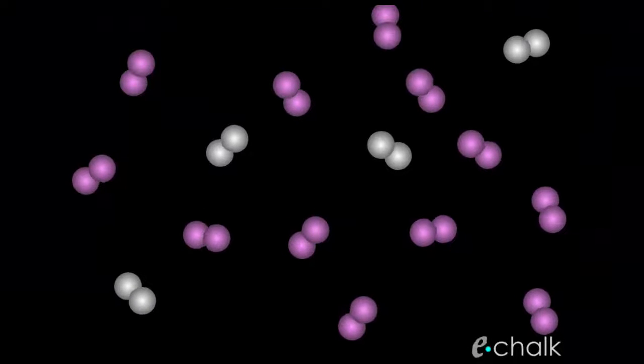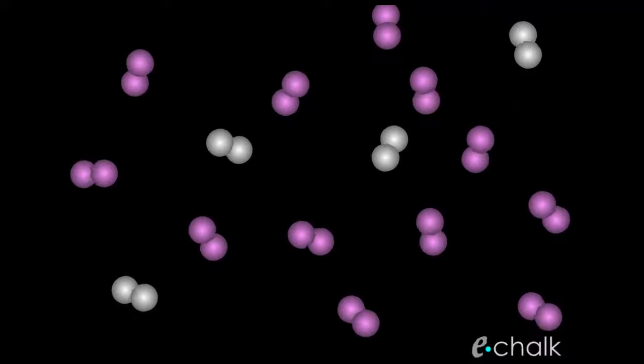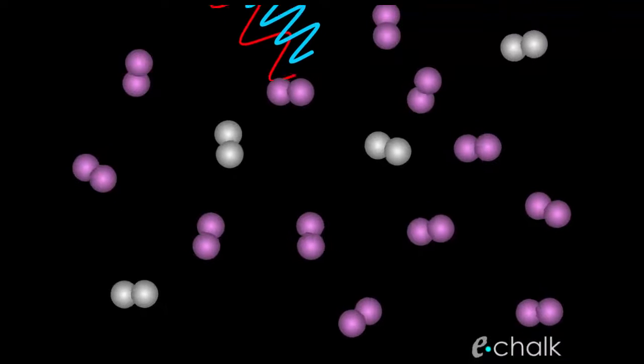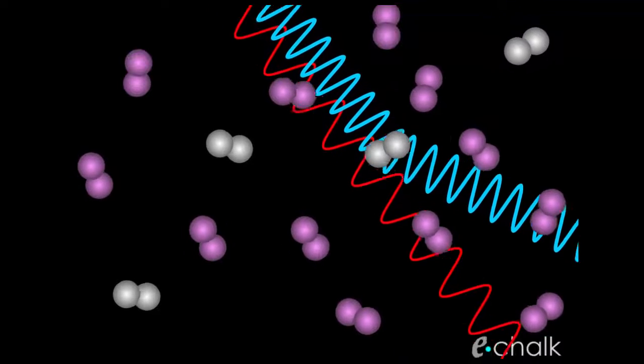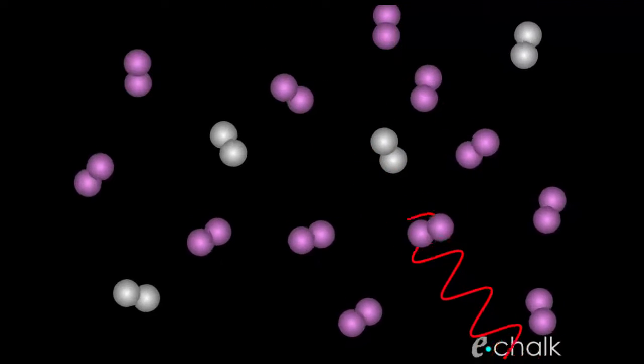Earth's atmosphere is mostly nitrogen and oxygen, and these particles are the right size to interact with the blue end of the visible spectrum. Light travels from the sun through space in straight lines, but when it approaches earth, the molecules in the upper atmosphere can cause it to scatter in different directions.